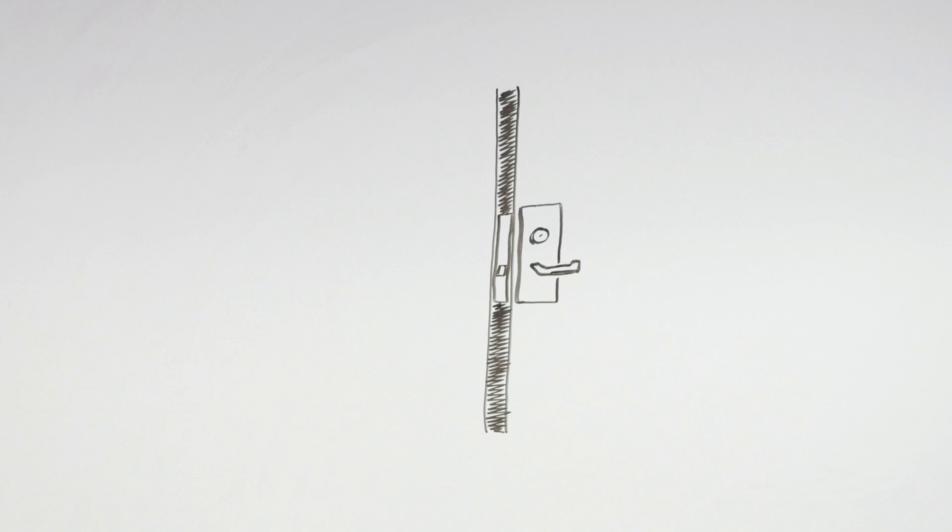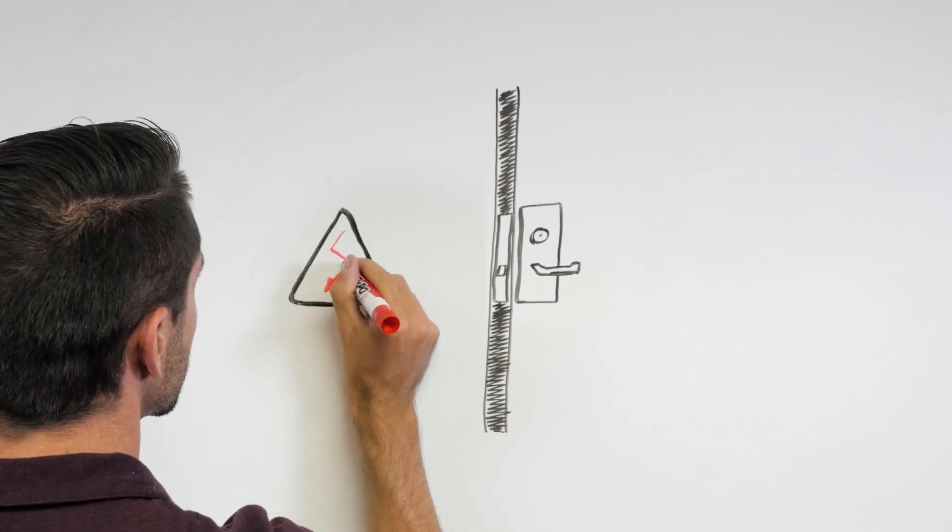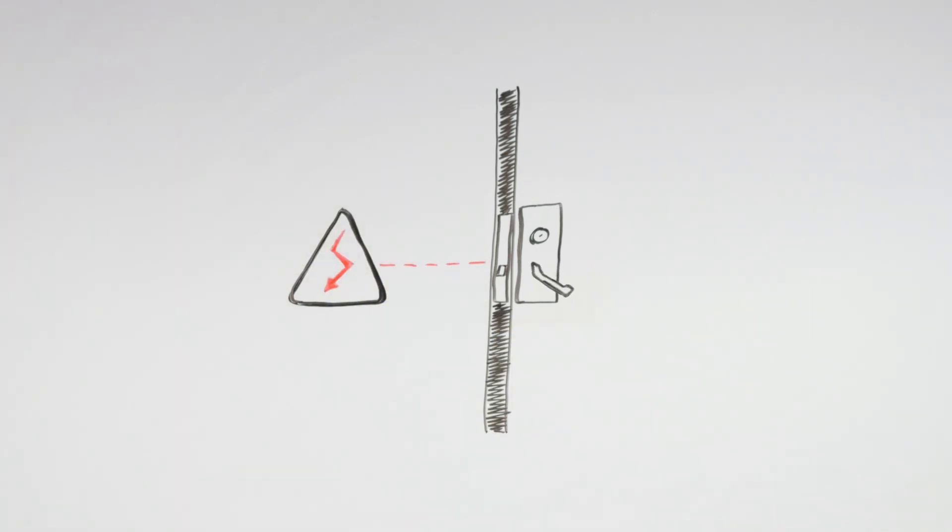A fail secure electromechanical lock set is locked from the key side when there is no power to the lock. When power is applied, the lock is unlocked so the lever can be turned to retract the latch. This is a good choice for areas where one needs to restrict access, should there be a loss of power.